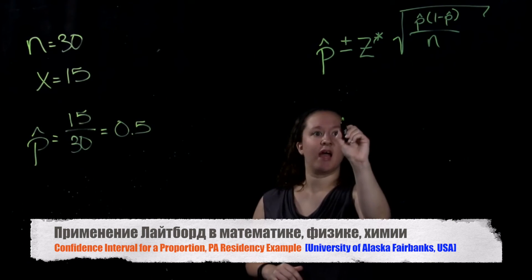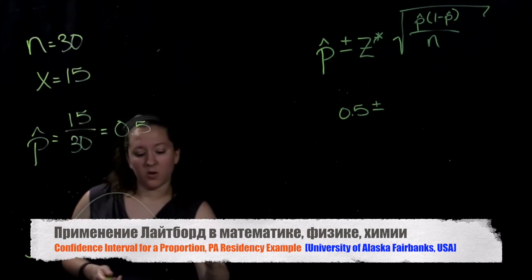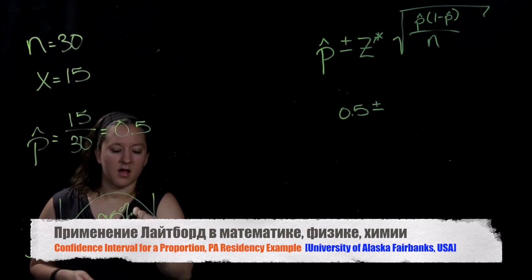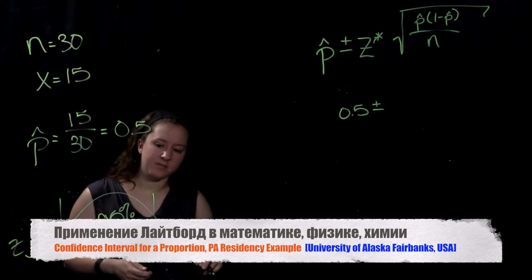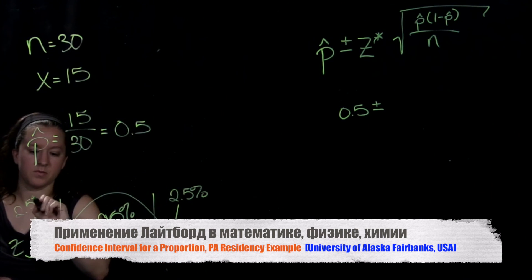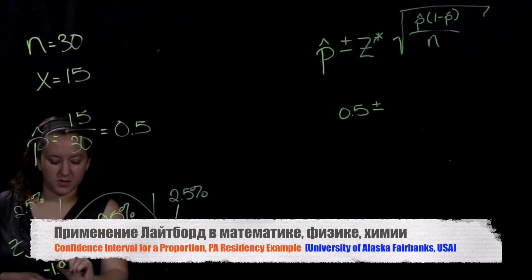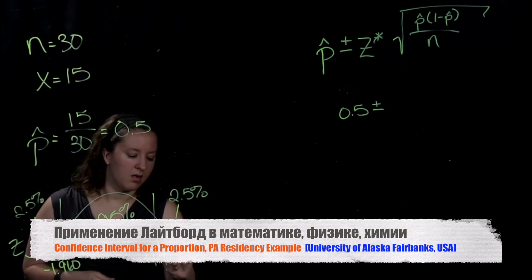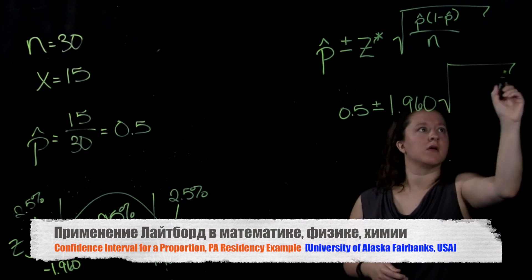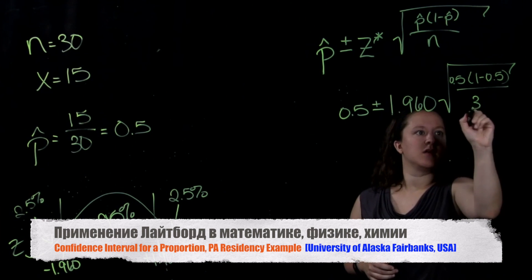You can now plug this into the formula: p-hat is 0.5 plus or minus the z multiplier. You can get this from the z table or using software such as Minitab Express. The z multiplier is the z score that separates the middle 95% of the z distribution from the outer 5%, which is split between two tails — 2.5% at the top and 2.5% at the bottom. The z score for the middle 95% is plus or minus 1.960. Now we can compute the standard error as 0.5 times (1 minus 0.5) divided by the sample size of 30.